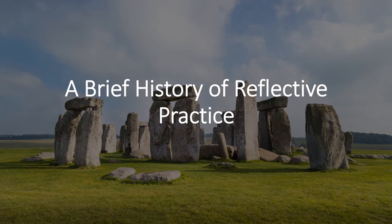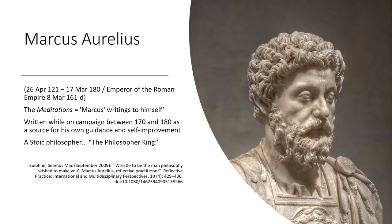Let's look at the way in which reflective practice has emerged in recent years. Marcus Aurelius, who was emperor of the Roman Empire from 161 to 180, kept a personal reflective journal, subsequently published as the Meditations, or Marcus's Musings to himself. Many of these were written while he was on campaign between 170 and 180 as a source of his own guidance and self-improvement. Aurelius was one of the early Stoic philosophers, known rather strangely as the philosopher king.